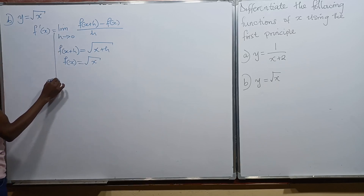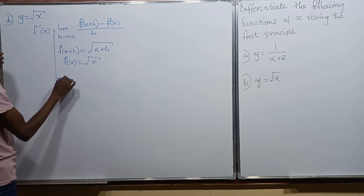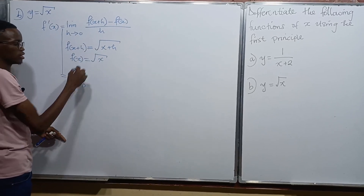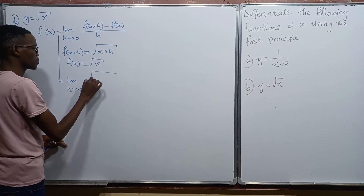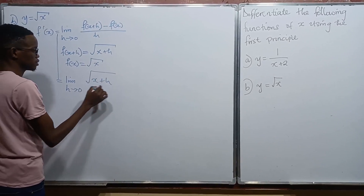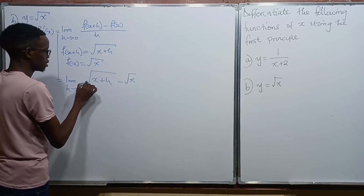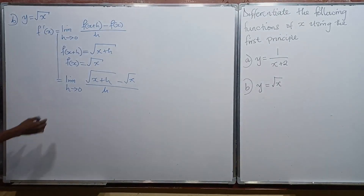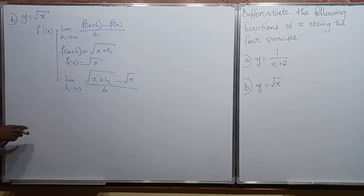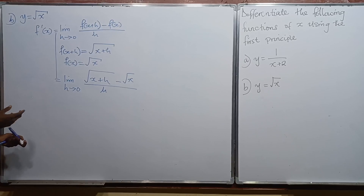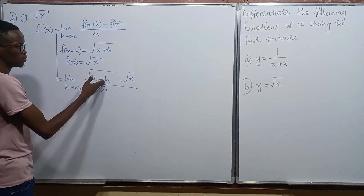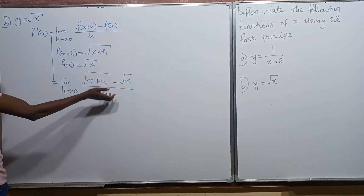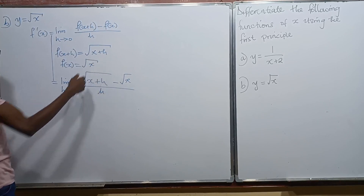So we have the limit as h approaches 0 of the square root of x plus h minus the square root of x, all divided by h. At this point we need to work it out in such a way that we're able to factorize h out. We can't set h equal to 0 yet because we'd have 0 in the denominator, which would be undefined.